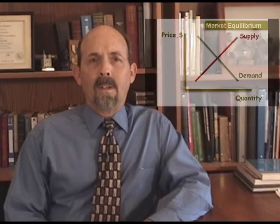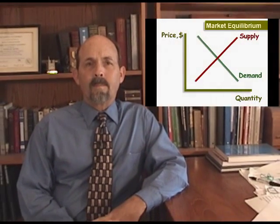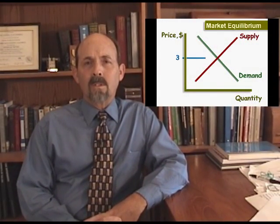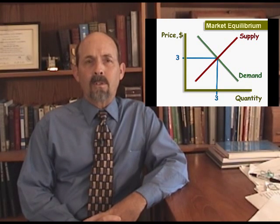Supply and demand drive markets towards equilibrium. Market equilibrium is achieved when the quantity producers are willing and able to supply is equal to the quantity that consumers are willing and able to purchase. There's only one price where supply equals demand. In this market, equilibrium occurs at a price of $3, where three units will be offered and purchased.